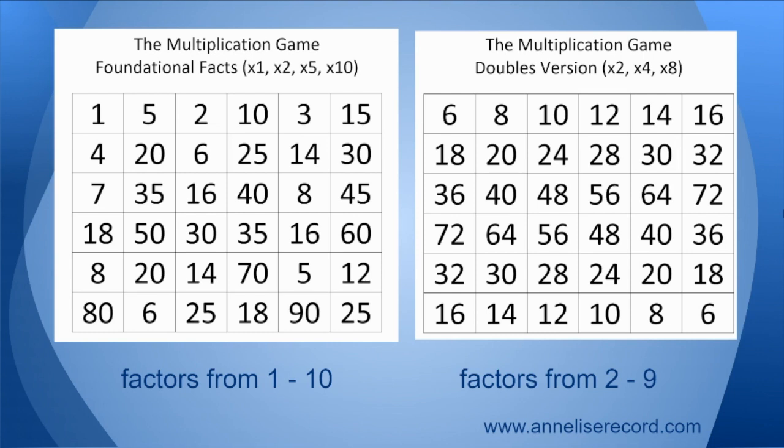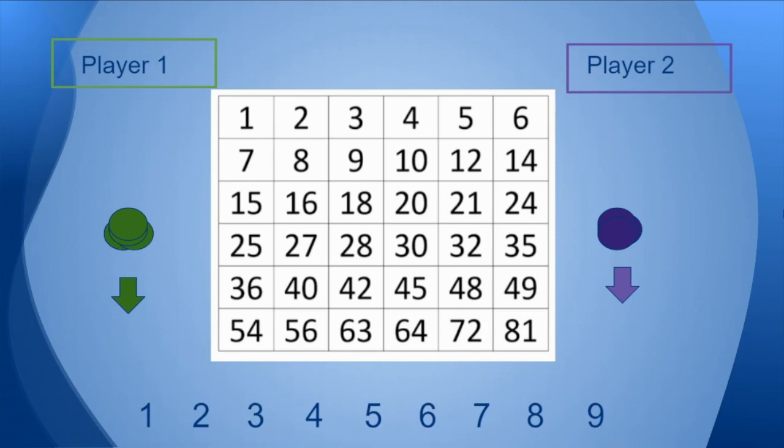On the left you'd work with students on foundational facts. The one on the right works on related facts—doubles of twos and fours, where fours can be doubles of twos and eights doubles of fours. Then we have this version for all the math facts. It's a wonderful game that involves strategy, choice, and thinking about lots of different math facts.